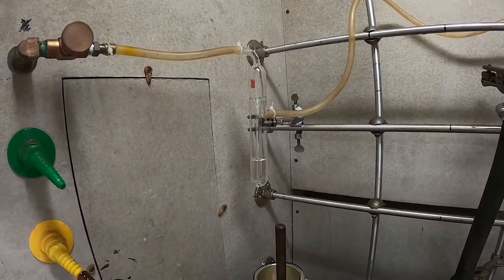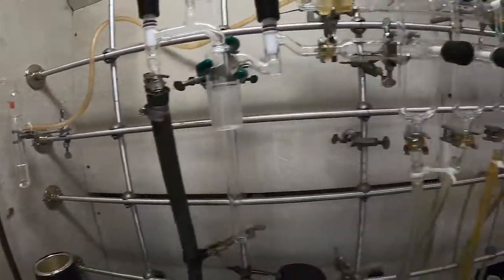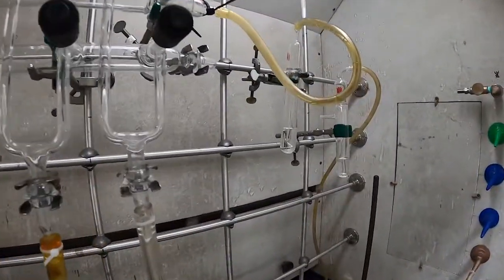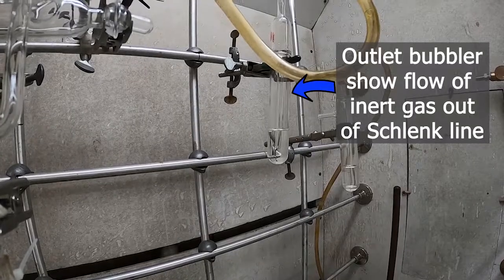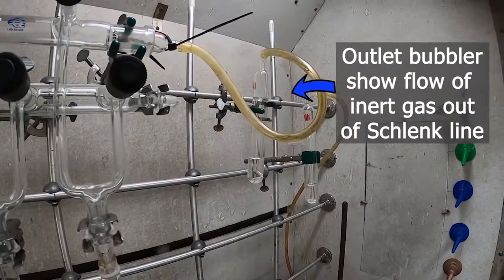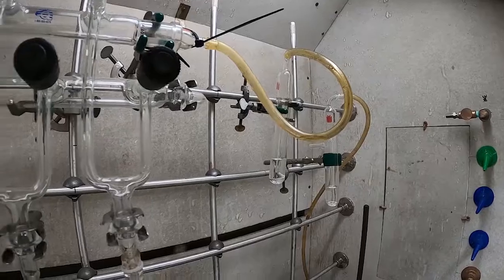So here we can see the inlet bubbler for this system, letting nitrogen in. And the outlet bubbler is over here. You can see gas is coming out through the outlet bubbler there at about the same rate.